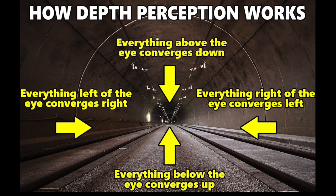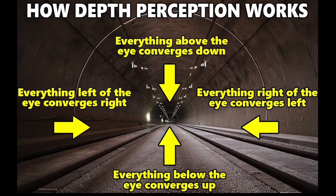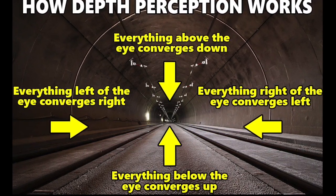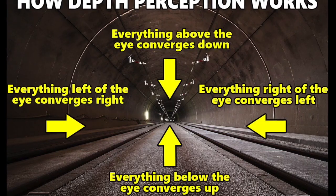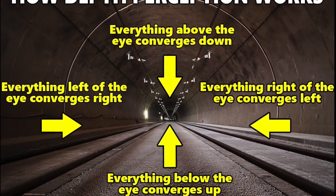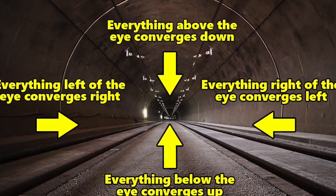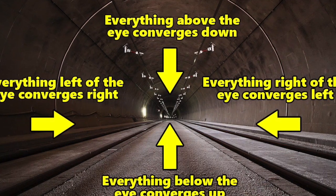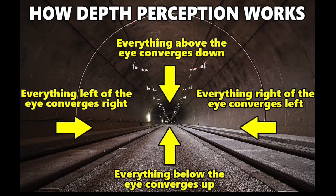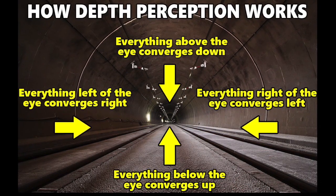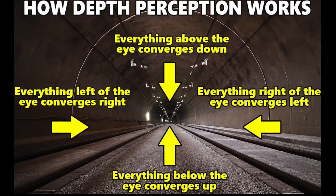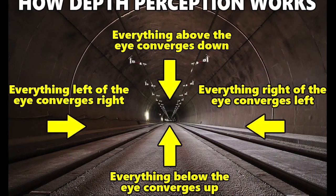This causes things below true level to rise up to the line of true level as they recede. Also, things above true level will lower down to the line of true level as they recede. It's critical to remember that things below true level will never appear above true level, and things above true level will never appear below true level.